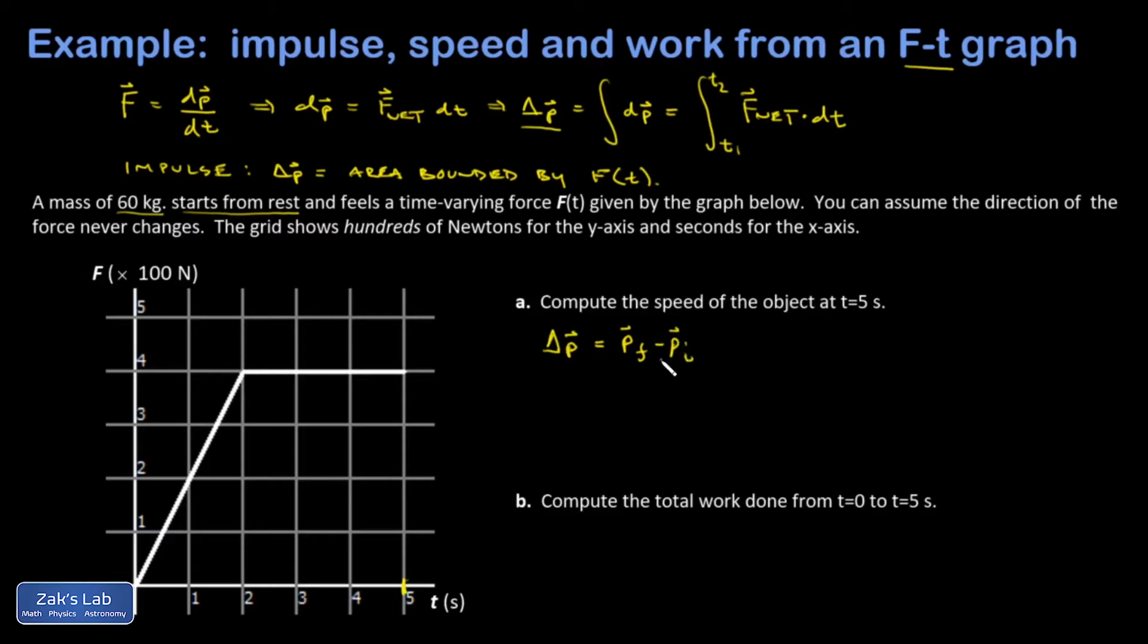I can say that delta p, that's p final minus p initial. P initial, by the way, is zero because the object started from rest. And that'll be given by the area under the curve.